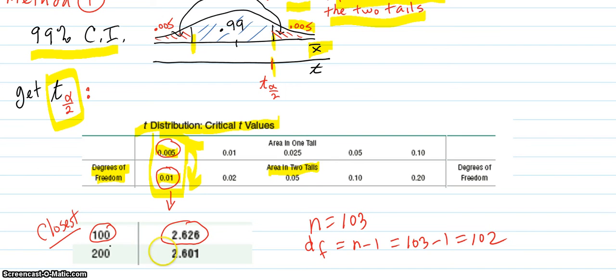You're looking for n equals 103. Degrees of freedom is n minus 1 for this design for one mean, so 103 minus 1 is 102. And the closest degree of freedom to that in the table is 100. And in the column that we're in, that t-score is 2.626.